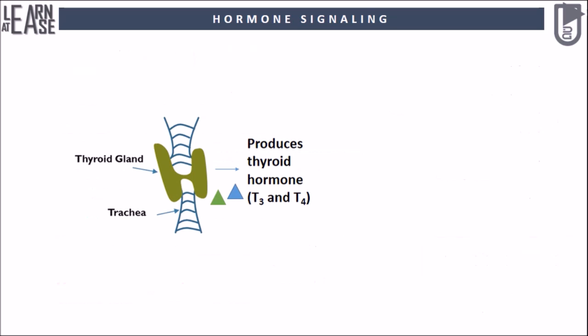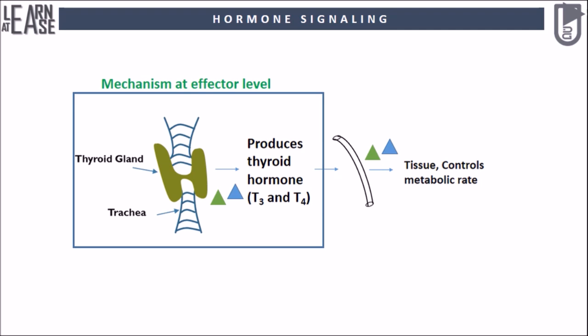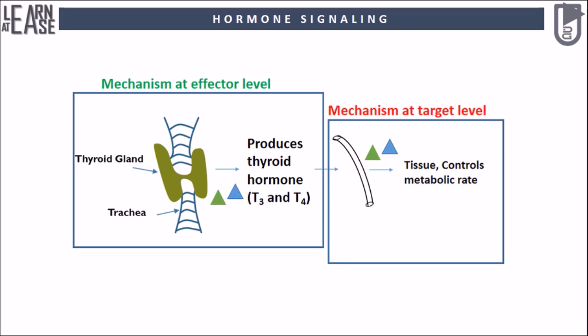Thyroid gland produces thyroid hormones abbreviated as T3 and T4, which are poured into the blood and affect vital biological processes throughout the body. The mechanism by which the thyroid gland produces T3 and T4 is called the effector mechanism, and the effect of these hormones on other tissues and organs is called the target mechanism. In this video I will explain the mechanism occurring at the effector level.